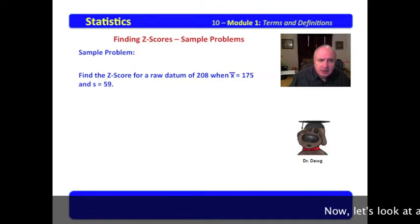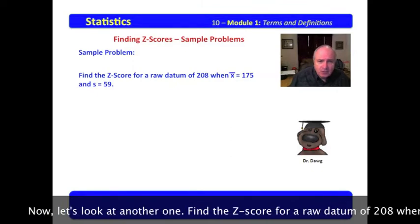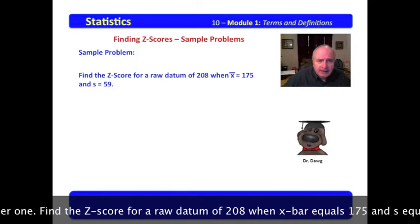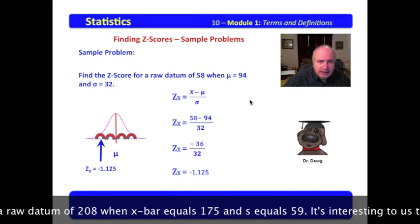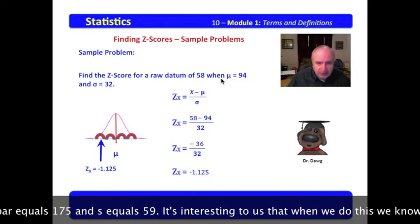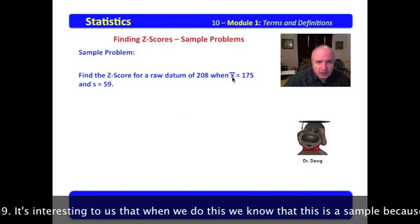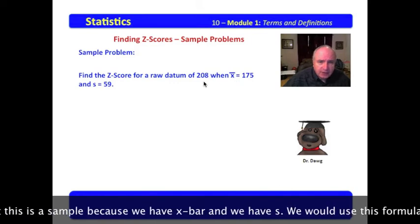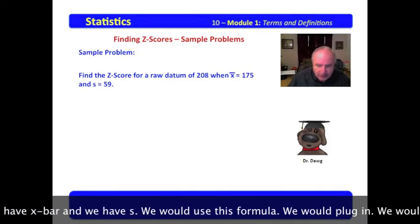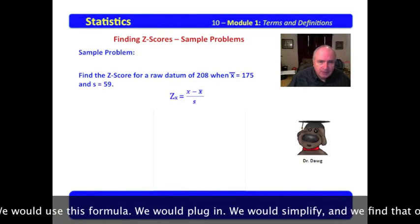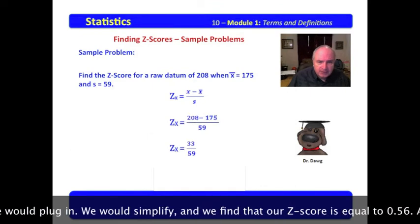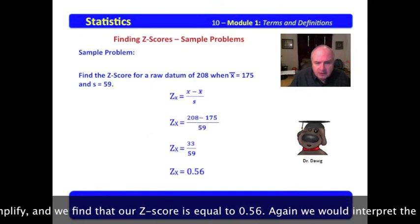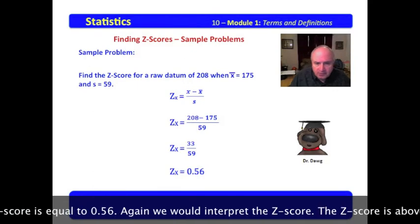Now, let's look at another one. Find the z-score for a raw datum of 208 when x̄ = 175 and s = 59. It's interesting to us that when we do this, we know that this is a sample because we have x̄ and we have s. We would use this formula, we would plug in, we would simplify, and we find that our z-score is equal to 0.56.